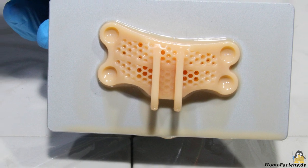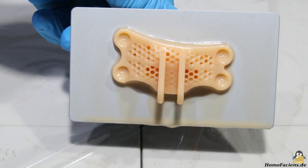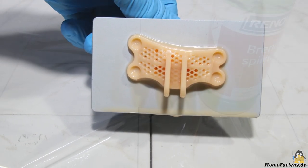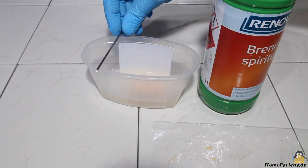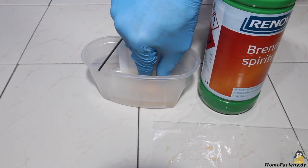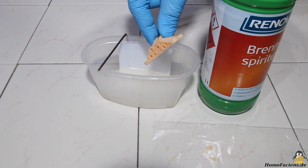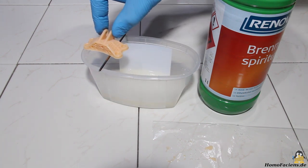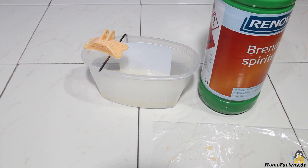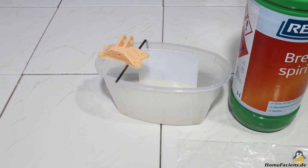Once printing is complete, the object has to be post-processed. After removing the print from the build plate, uncured resin on the surface must be rinsed off. I use alcohol from a hardware store, the resin is almost insoluble in water.